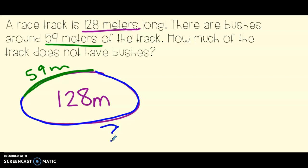So it's not the whole racetrack. It's only for 59 meters. Now, the question is, how much of the track does not have bushes? So that's this blue part here. How much does not have bushes? So second grade, the question is, do you think that we should add 128 plus 59, or do you think that we should subtract 128 minus 59? If you said minus, you are correct, because 128 is our total. And we can't have more of the track that doesn't have bushes.